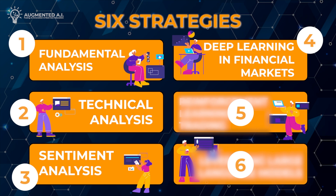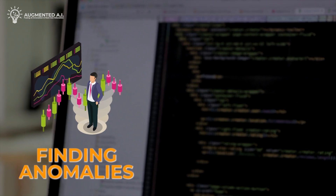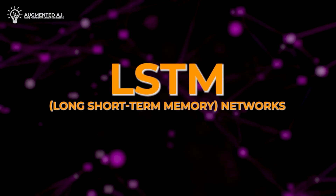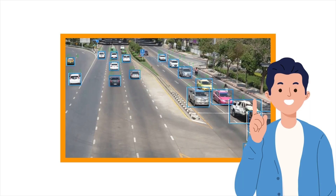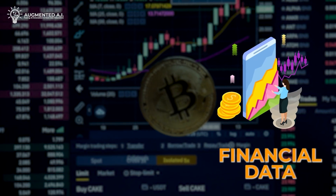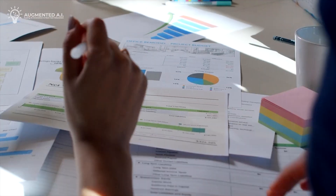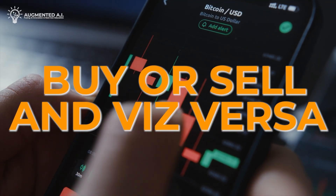Moving to Strategy 4, we explore deep learning in financial markets. This strategy is all about finding anomalies in market data using LSTM (long short-term memory networks), CNNs (convolutional neural networks) — and yes, they are not just for computer vision — and auto-encoders. Imagine a system that can detect the slightest unusual patterns in financial data. This makes a huge difference, for example in cases where you should hold instead of buy or sell, and vice versa.